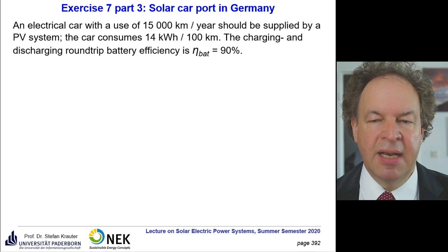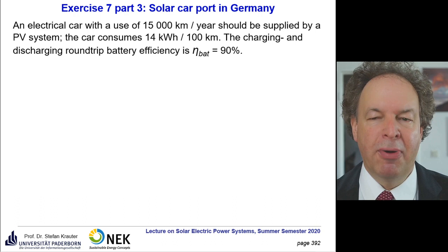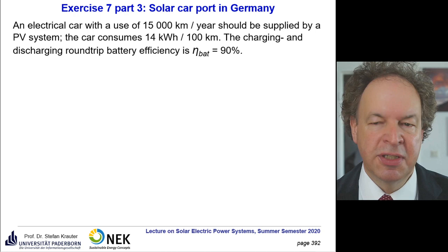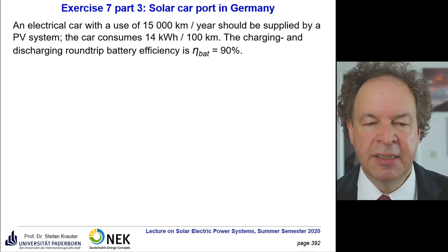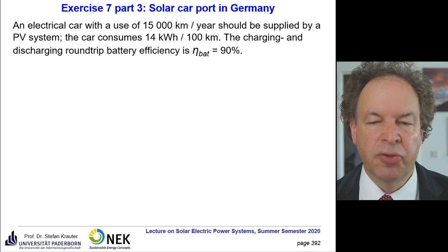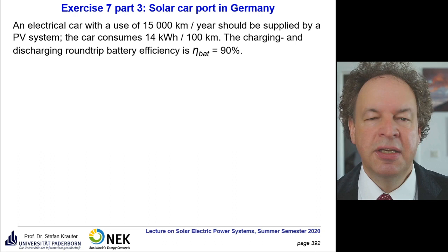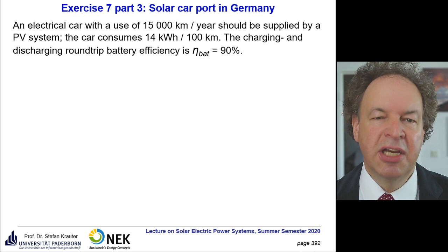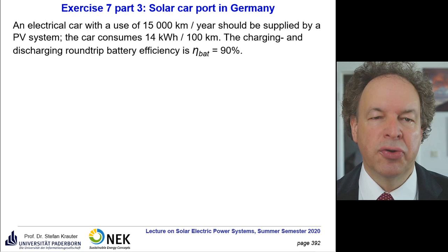The last part of our exercise goes very much smaller — we design a solar carport in Germany. We first have to find out the consumption, equivalent to the procedure we learned for designing a solar home system. We have basic data of our car: it should run 15,000 kilometers per year considering equal use of each month, consuming 14 kilowatt-hours per 100 kilometers — quite a typical value. The charging battery efficiency is 90%.